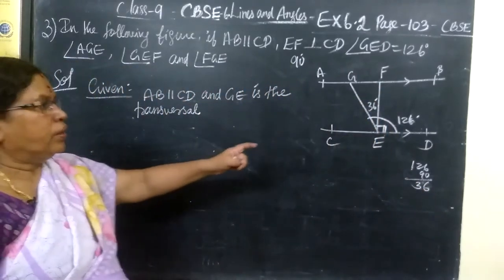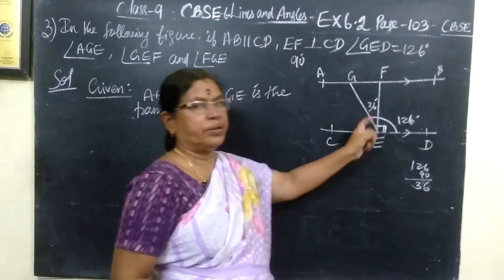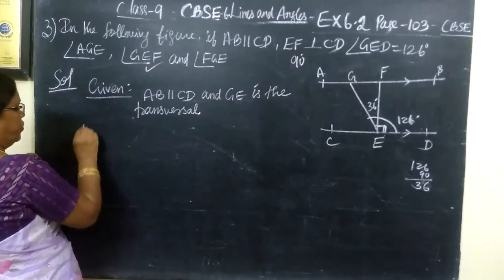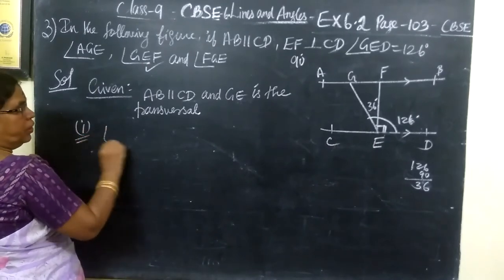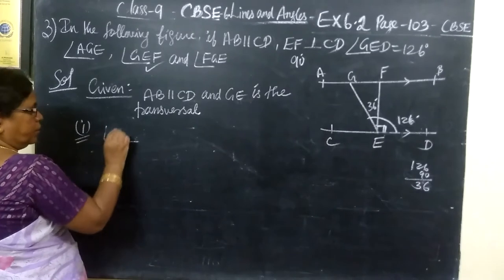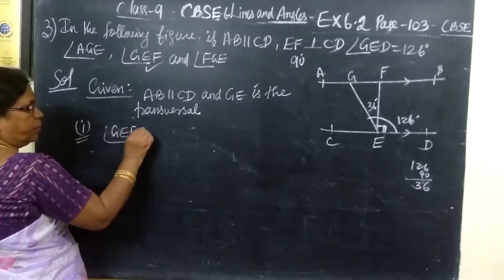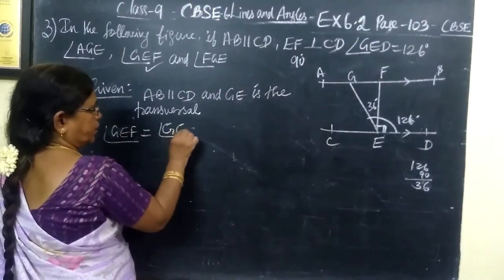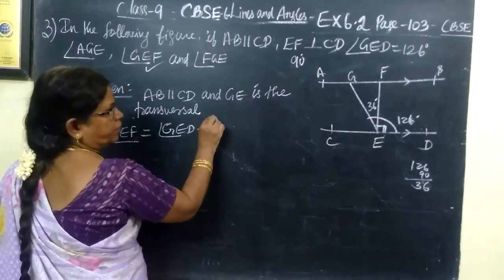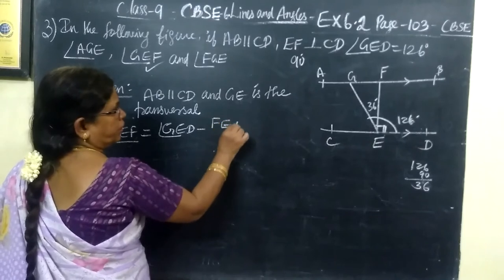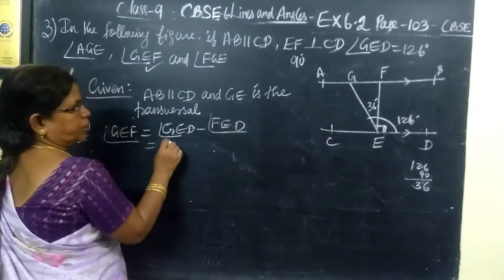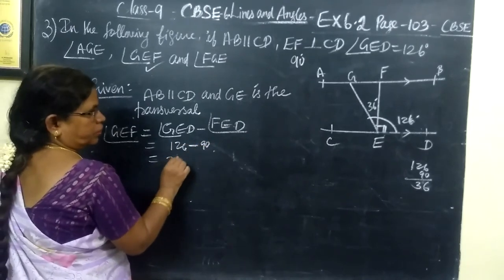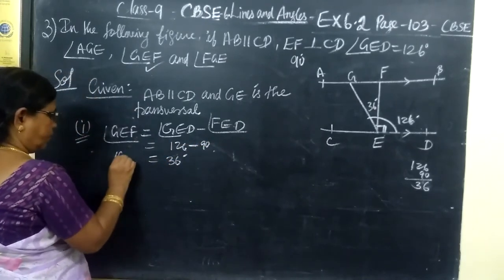It is very clear that 126 minus this 90 gives 36 degrees. So GEF, you have found this. Number 1, angle GEF equal to GED minus FED. So GED is 126 minus 90 equal to 36 degrees. So first part, over.